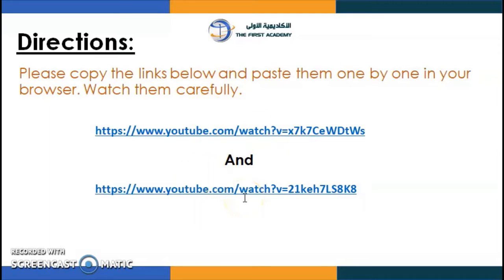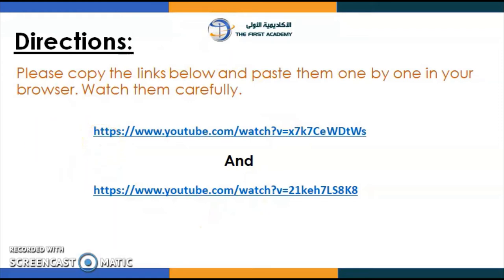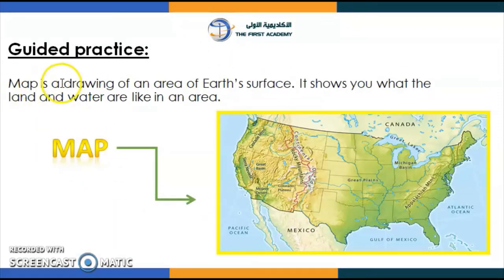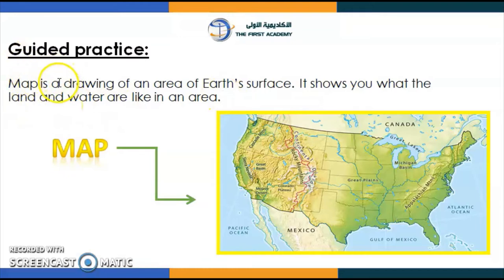We have two videos here and we're going to watch one together. After watching the video, we get to know what a map means. If you look at the picture here, a map is a drawing of an area of Earth's surface. It shows you what the land and water are like in an area. A map is a drawing — it could show land, water, or both — and it shows the location. For example, if you want to find the location of the UAE, you can open the map and check.